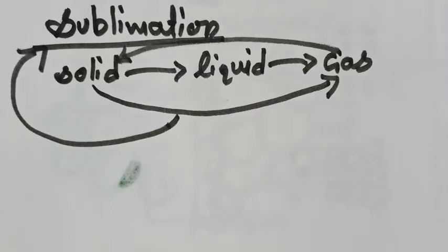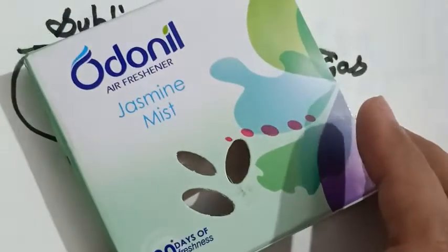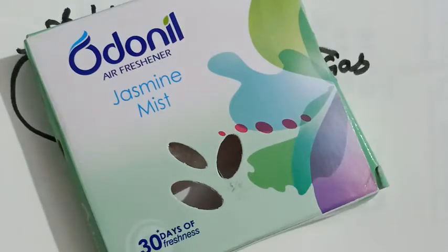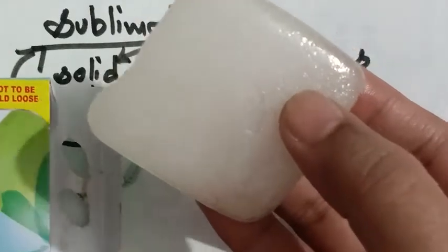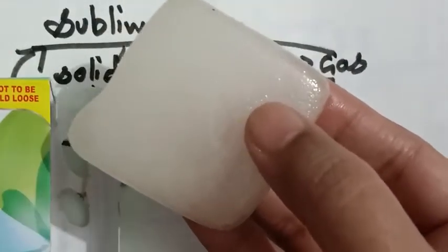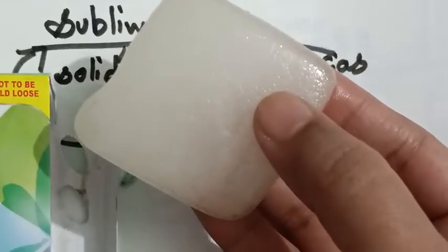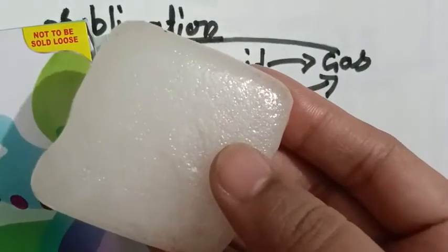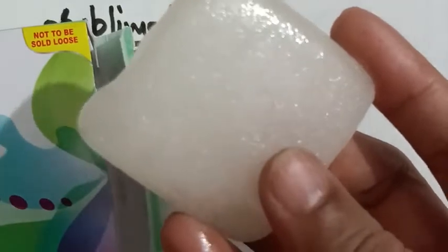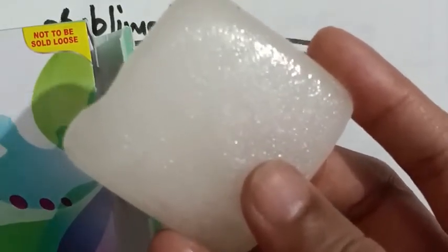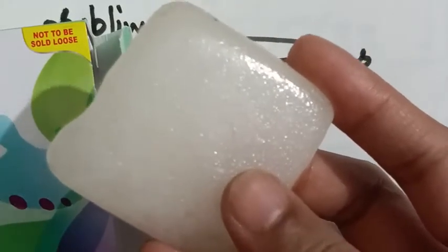A basic example of sublimation is an air freshener. You must have observed that an air freshener kept in the open slowly becomes smaller and finally disappears. In fact, it is made up of a chemical called naphthalene, which sublimes at room temperature. This air freshener demonstrates the process of sublimation, in which it directly vaporizes without melting.